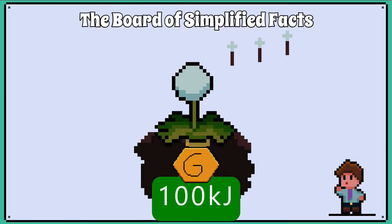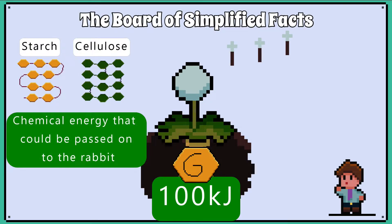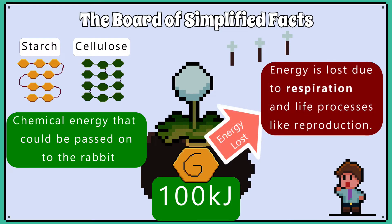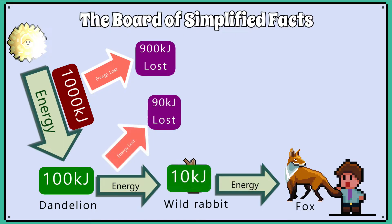Let's just say that 100 kilojoules is converted into glucose. The plant did not use all that 100 kilojoules just for making and storing chemical energy in the form of starch. The plant will use some of that glucose for respiration, and energy is lost as heat during this process. The plant would also have produced petals, seeds, and waste products that the rabbit won't have eaten. The rabbit in this case receives 10 kilojoules of energy from the dandelion.